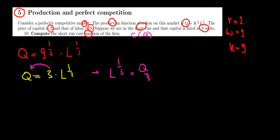Now, to get rid of this 1 over 3, let's raise both sides to the power of 3. So we raise this 1 to the power of 3 and the other side to the power of 3 because this is an equation and we can do so. On the left side, we're left with only L. On the right side, we will have Q to the power of 3 divided by 27. So now we have the labor function depending on the quantity.